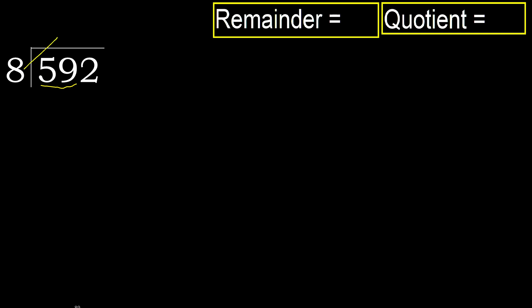Multiply by which number is nearest to 59, but not greater? 8 multiplied by 8 is 64 — 64 is greater. Multiply by 7: 56. It's not greater. Subtract: 59 minus 56 is 3.